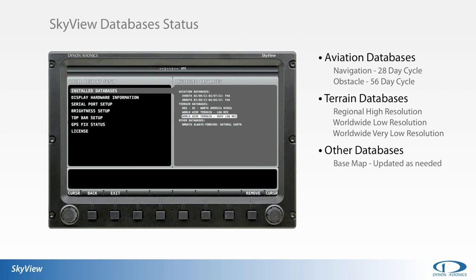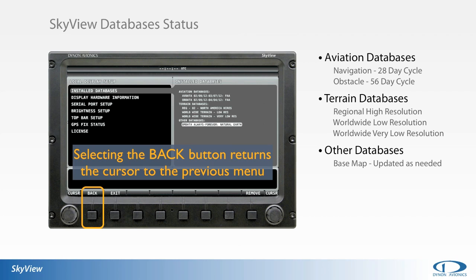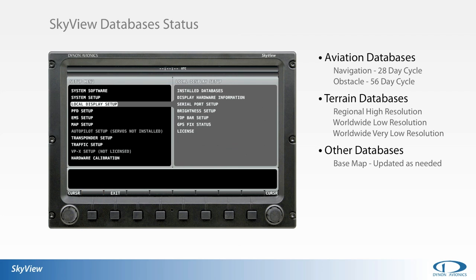The Other Databases section currently contains a base map. The base map contains limited cultural data like political boundaries. We are currently working to expand the information provided in the base map database. Selecting back — button number 1 — returns the cursor to the previous menu until reaching the main setup menu. Selecting exit — button number 2 — from any page returns the user to the main Skyview display. Either joystick can also be used to move the cursor about and between pages.